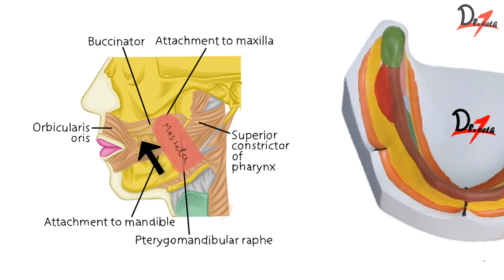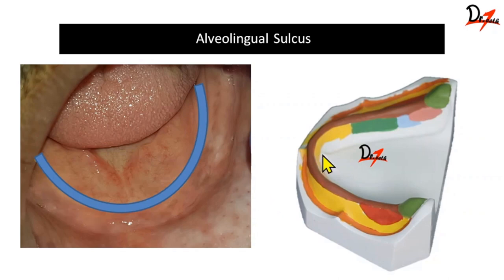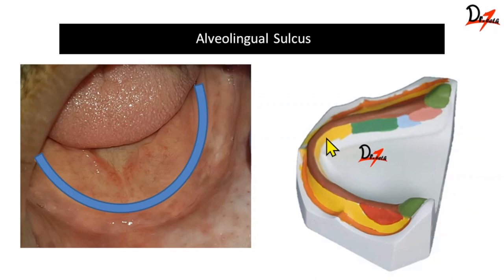So that is the masseteric notch. Now let's see what is the alveolingual sulcus. This blue area is the alveolingual sulcus and it extends from the lingual frenum till the retromylohyoid curtain, and it is divided into three parts: anterior, middle, and posterior.